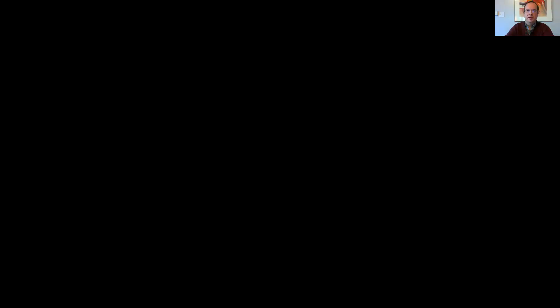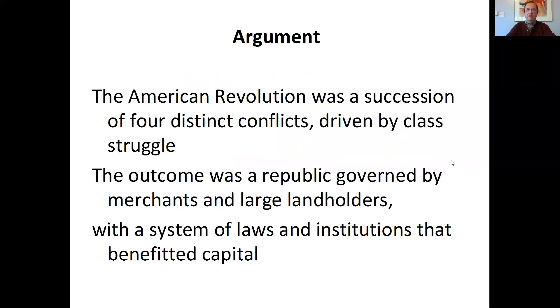So I want to try and untangle this, and therefore I'm going to go to the lecture slides here. The main argument I want to make is, first of all, we want to understand the American Revolution not as a monolithic event, but rather as four conflicts that happened in sequence. And these conflicts are best understood if we consider what class interest informed the different parties that participated in this struggle.